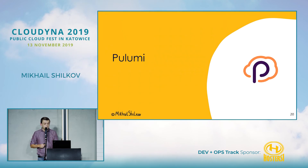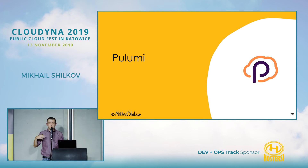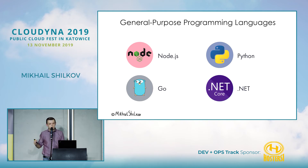Pulumi was the first one. You can think of it as sort of Terraform but using general-purpose programming languages. They're also open source and multi-provider. You can currently use JavaScript, TypeScript, Python, Go, C#, F#, and Visual Basic to define your cloud infrastructure.